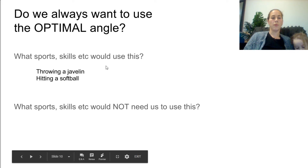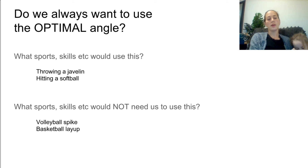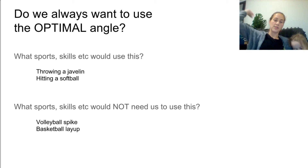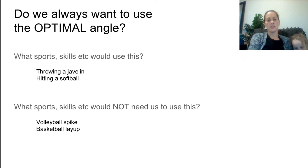What sports and skills would not need to use the optimal angle? A volleyball spike — where the angle is aimed downward — and a basketball layup, where the angle would be closer to 80 degrees.